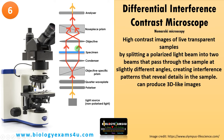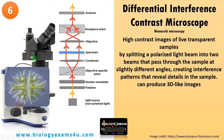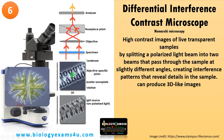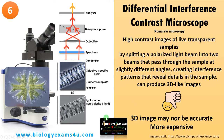The DIC microscope can produce 3D-like or pseudo-3D images. Comparing an image in phase contrast to one under the differential interference contrast microscope, the DIC image has a clear 3D effect. The downside is that the 3D image may not be accurate, and it is more expensive compared to a normal phase contrast microscope — it is essentially an advanced version of it.